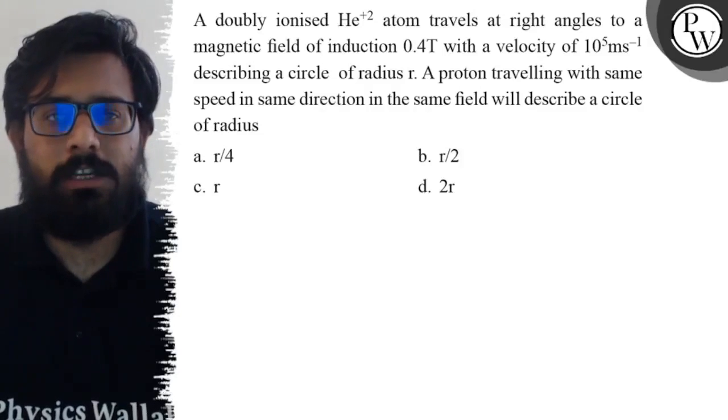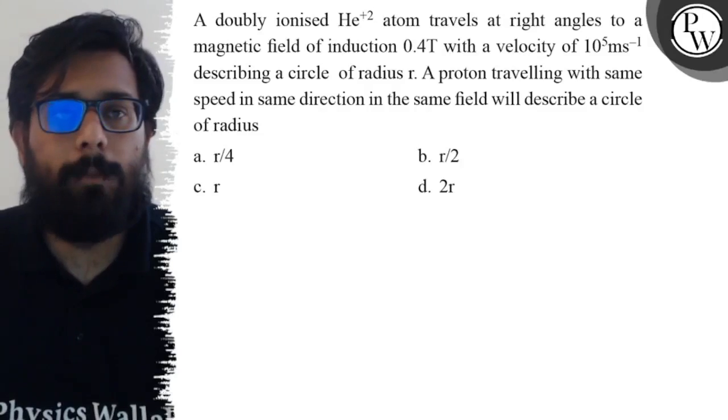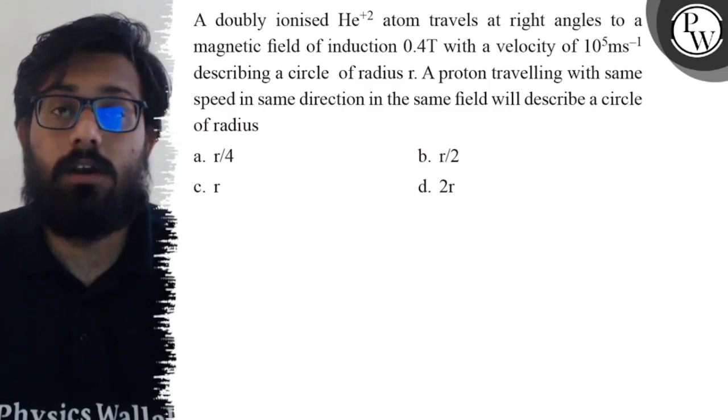Hello, so let's see the question. A doubly ionized helium atom travels at right angles to a magnetic field of induction 0.4 Tesla with a velocity of 10^5 meters per second, describing a circle of radius r.